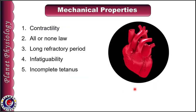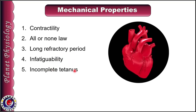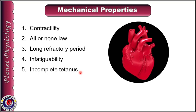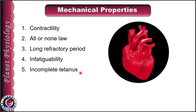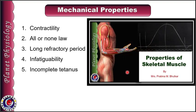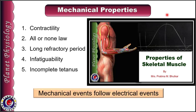Mechanical properties of cardiac muscle include contractility, all or none law, long refractory period, infatigability, and incomplete tetanus. Most of these properties are similar to those of skeletal muscle. Since you have already studied skeletal muscle properties, we shall also discuss the differences between the same property as exhibited by skeletal muscle and that of cardiac muscle. The link for the skeletal muscle video is provided in the description box below as well as in the card above. Before starting, please remember that mechanical events always follow electrical events — that means action potentials will occur first, and then the mechanical events, i.e., contraction and relaxation.